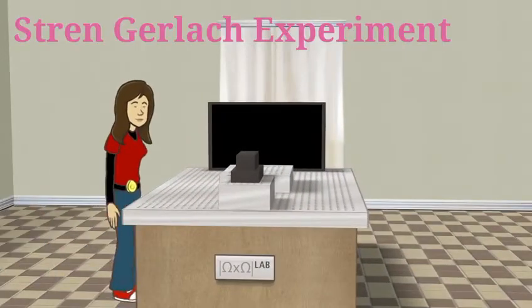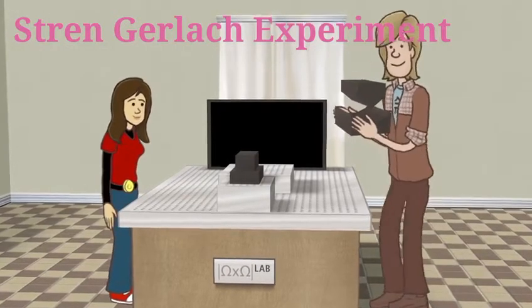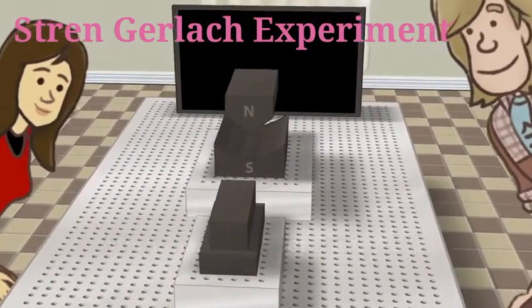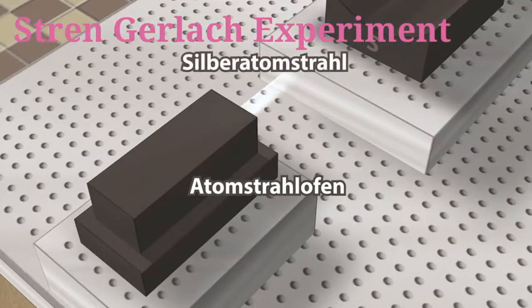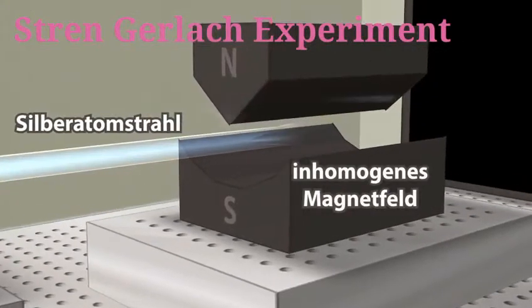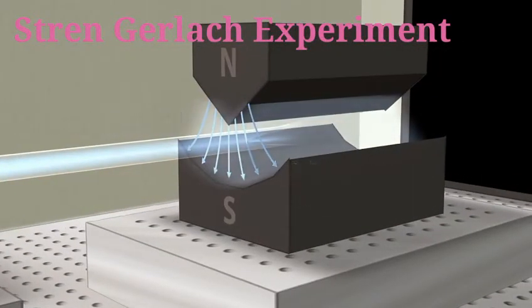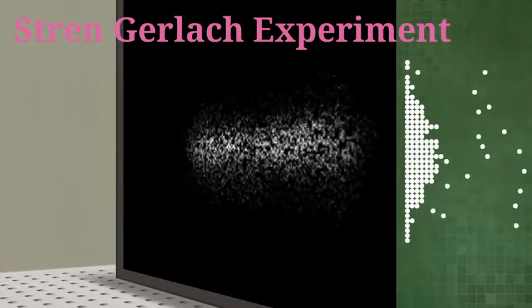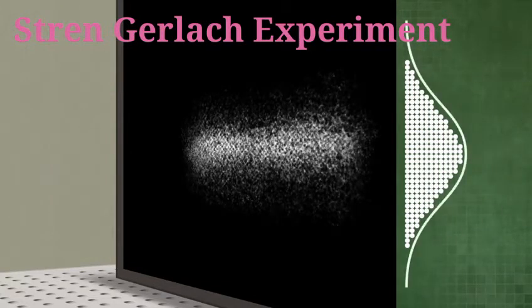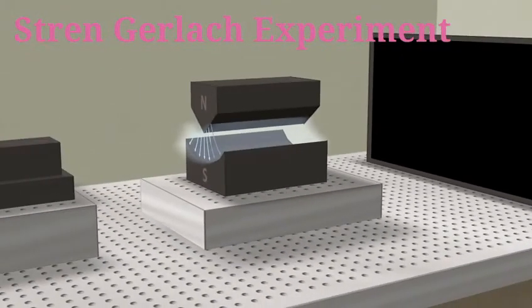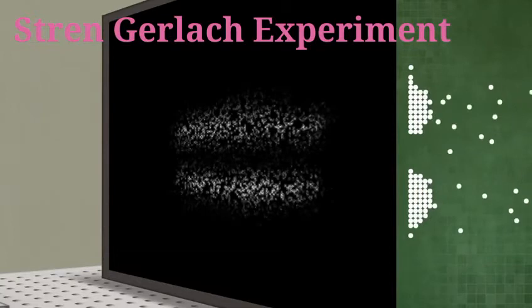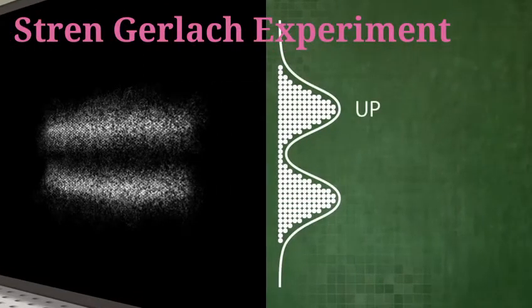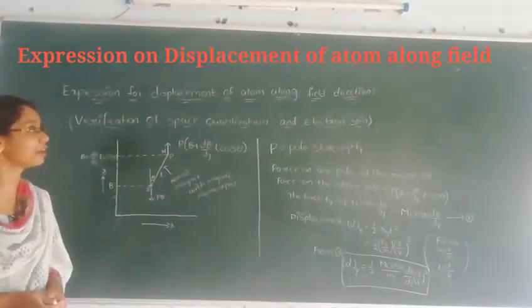The Stern-Gerlach experiment, performed in 1922, delivered the first experimental proof of the fascinating degree of freedom of electron spin. A beam of silver atoms was generated in an atomic beam furnace. It was then sent towards an inhomogeneous magnetic field. According to classical physics, one would expect the magnetic moments of silver atoms to be randomly oriented. They should be deflected in the inhomogeneous magnetic field by different amounts, depending on their orientation. However, the researchers observed that the beam was split in two possible states, which were later named spin-up and spin-down.